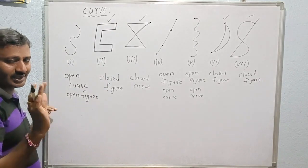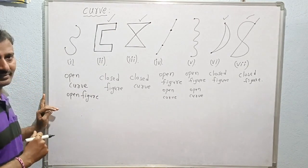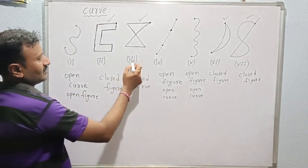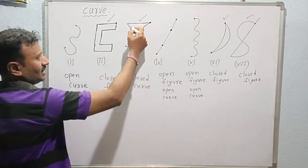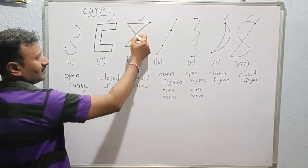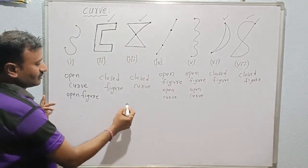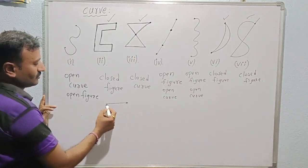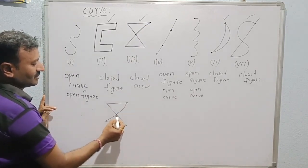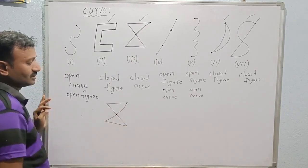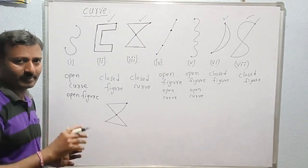Now for figure three, when we draw it, there are two places where the lines meet — here one time and here another time — so it intersects at two points. For a simple closed figure, the lines should intersect at only one point: the end point or starting point.